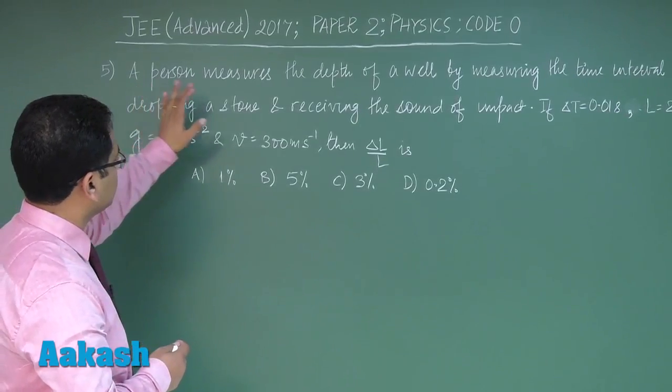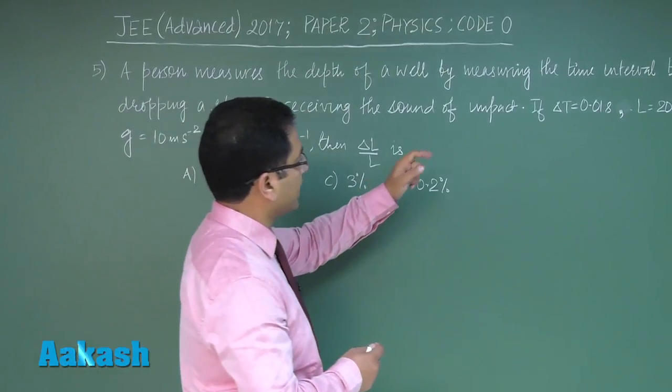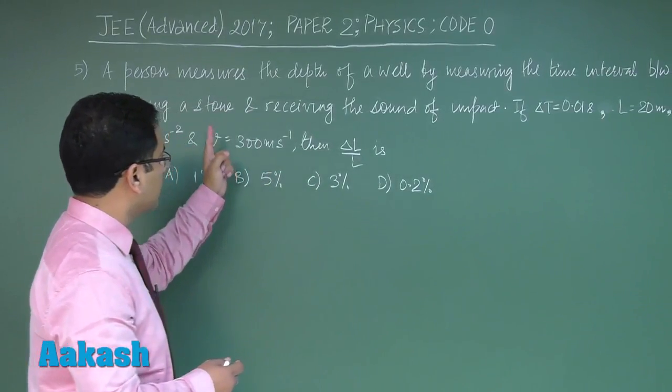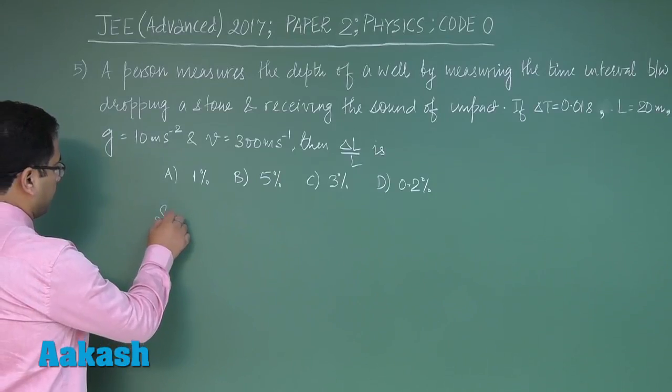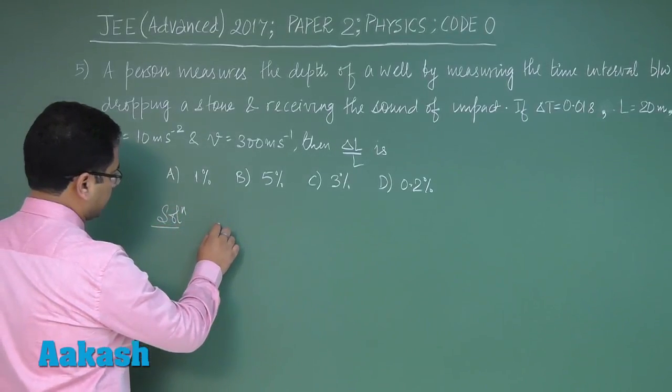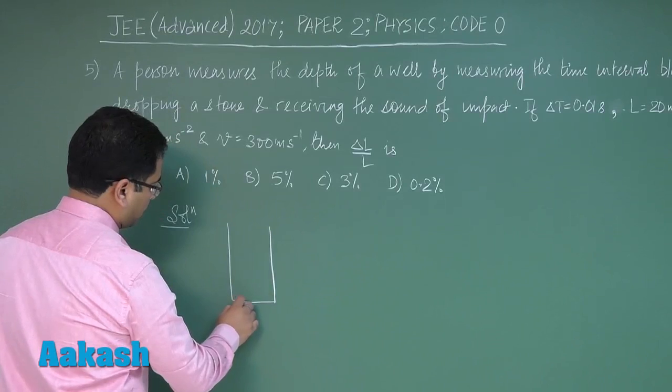It says a person measures the depth of a well by measuring the time interval between dropping a stone and receiving the sound of impact. So the basic idea underlying this is: if this is the well, the water level is here.